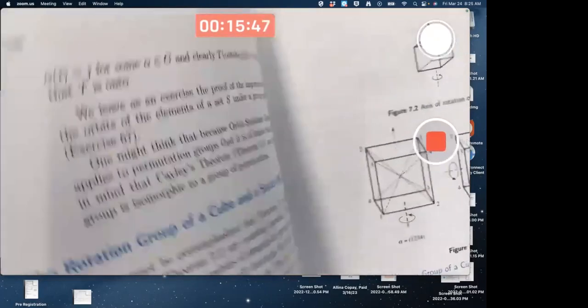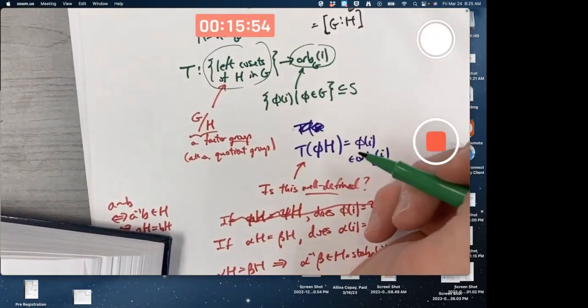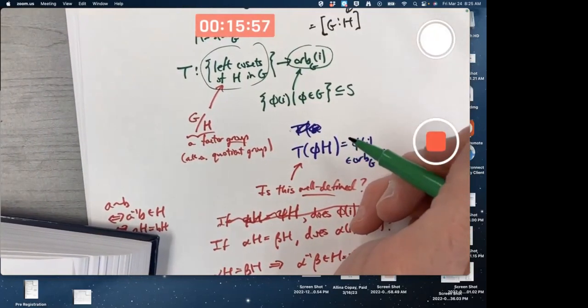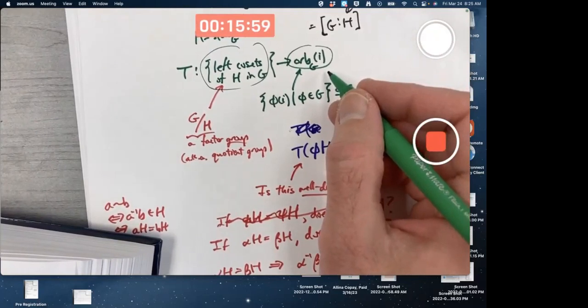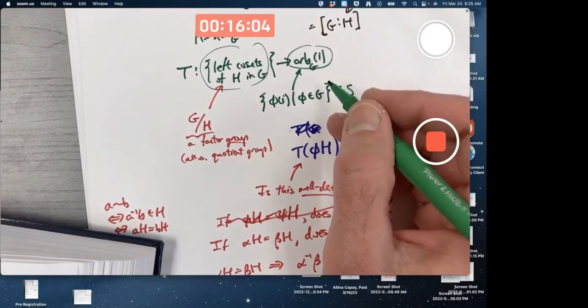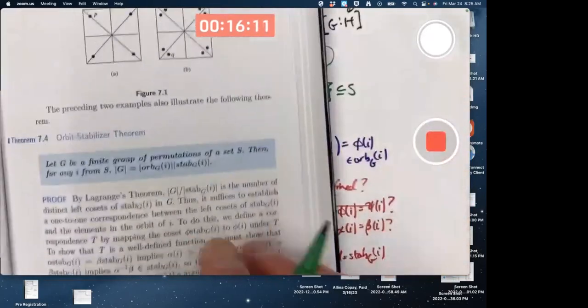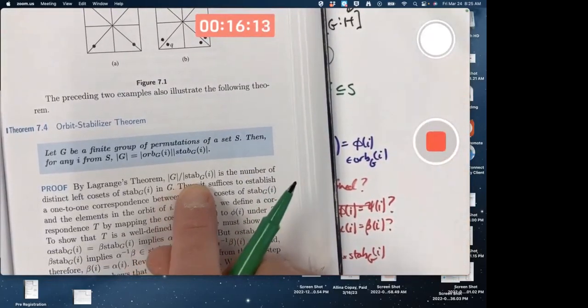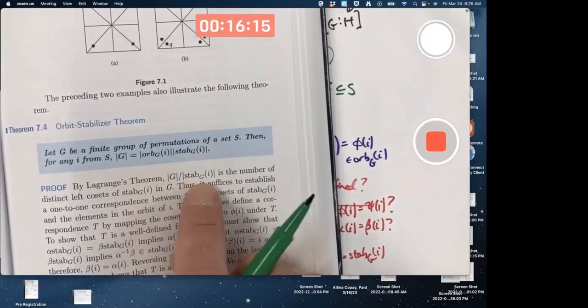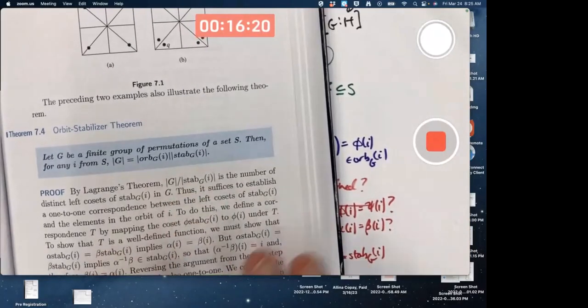These two sets have the same number of elements. You could say their orders are the same although the orbit again is not a subgroup. You could also say their cardinality is the same if you want to get a fancy word in there. Same number of elements. And that concludes the theorem because then you just multiply. This is equal to the order of the orbit and then just multiply both sides of the equation by the order of the stabilizer.